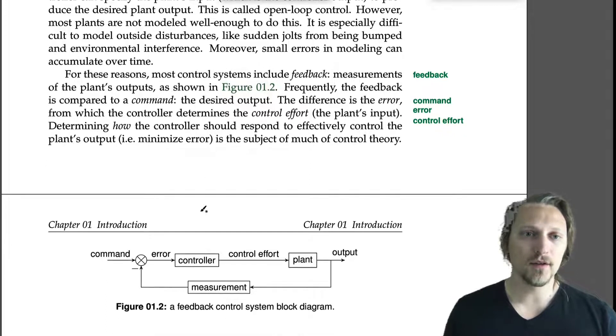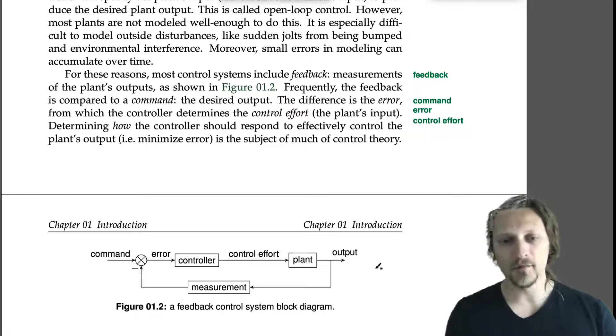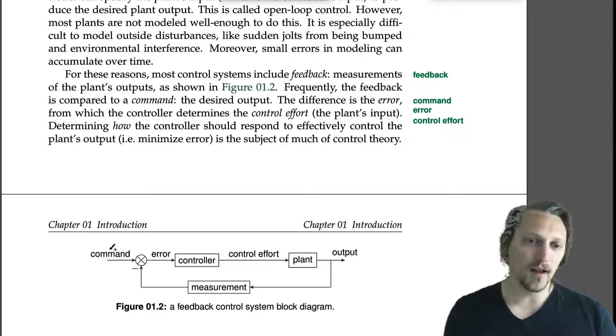Frequently the feedback is compared to a command. The command is what we are going to specify in order to make our output correct. So say we want the output to be five meters. The measurement changes that from five meters to maybe a certain voltage or maybe some numerical value in a computer. The command then says, okay, I want that value coming out of the measurement to be...